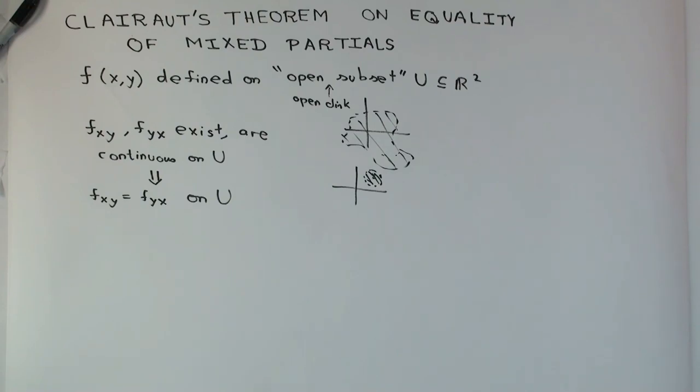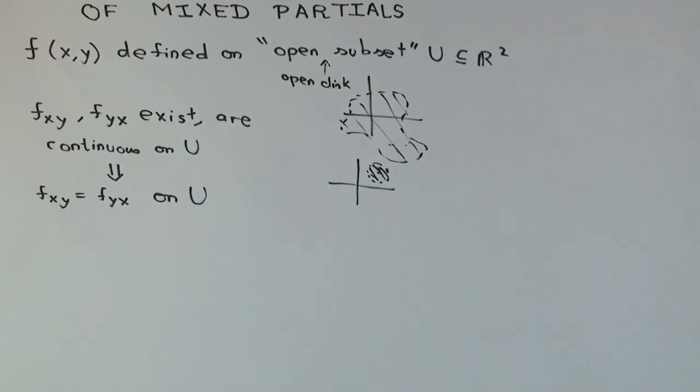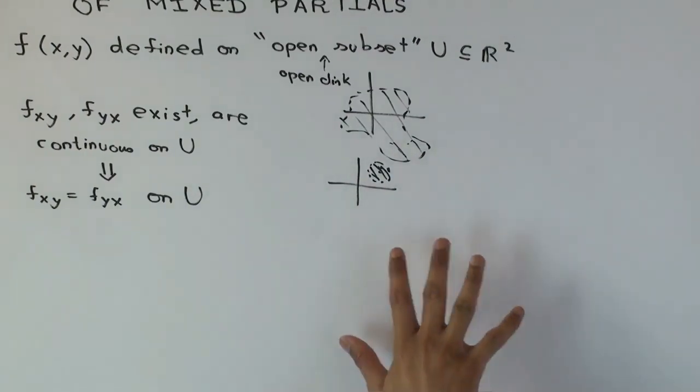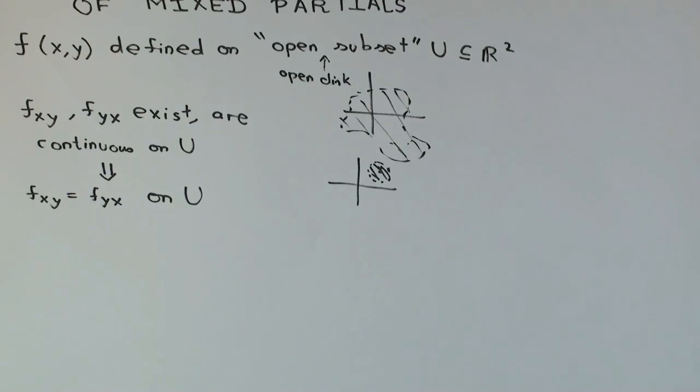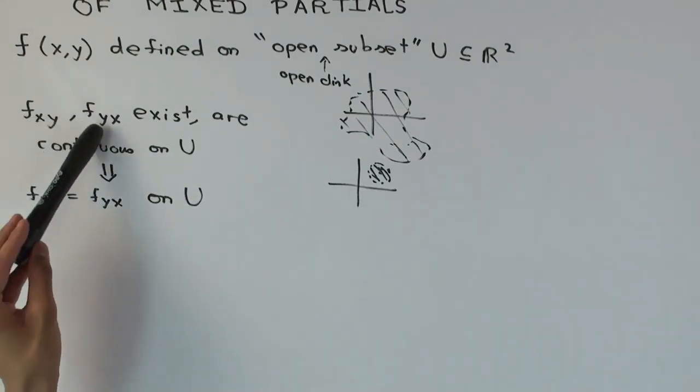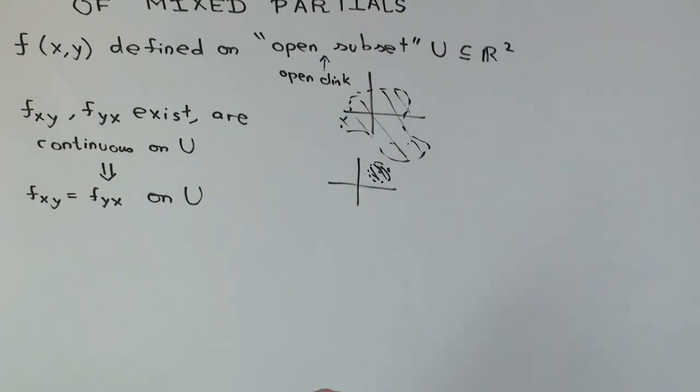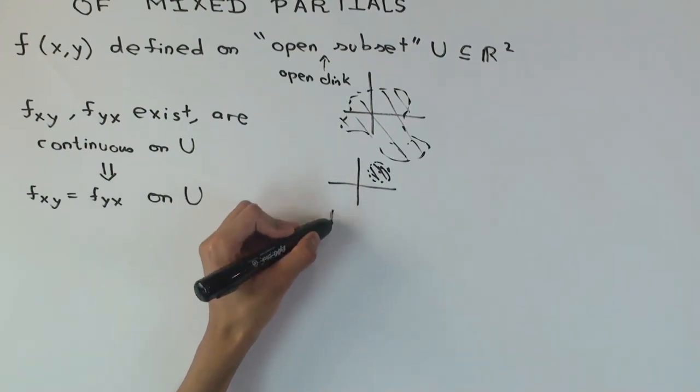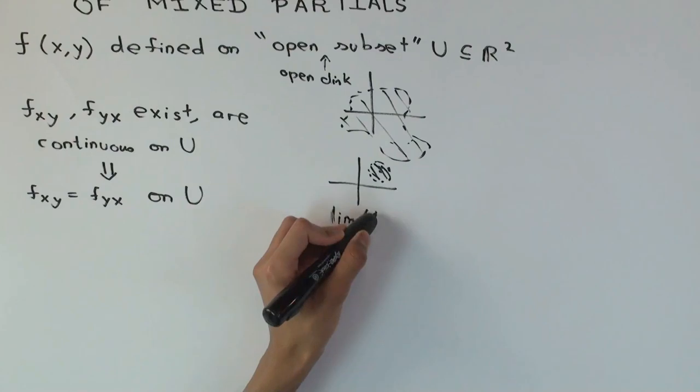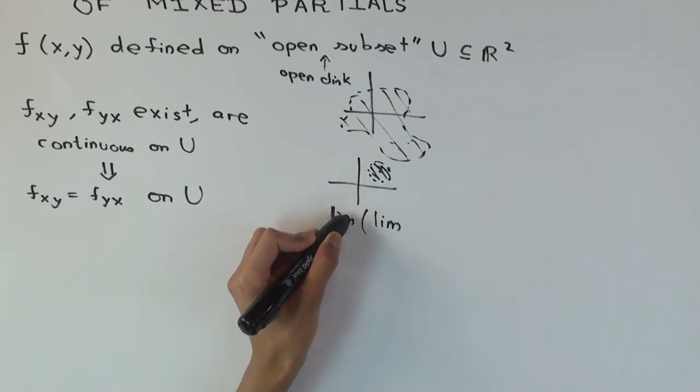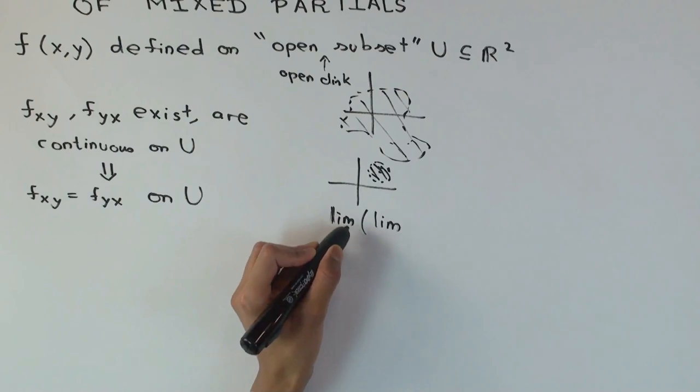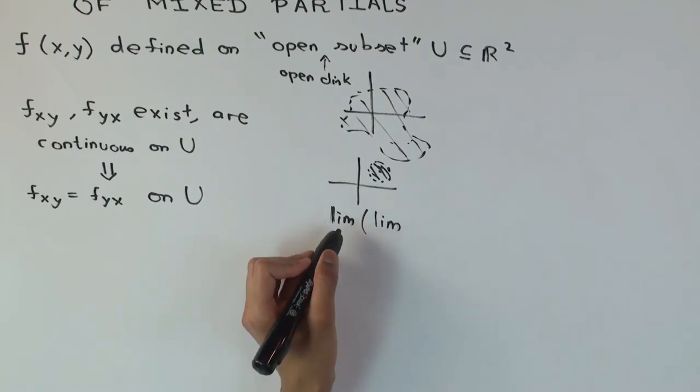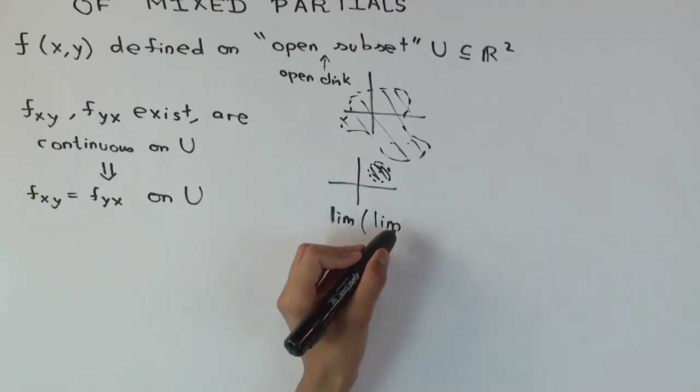What's the intuition for why this is true? One way is to write out the expressions as limits and do double limits. Both of these will come out as some kind of double limit, because each time you differentiate you get a limit, so you have limit of a limit.